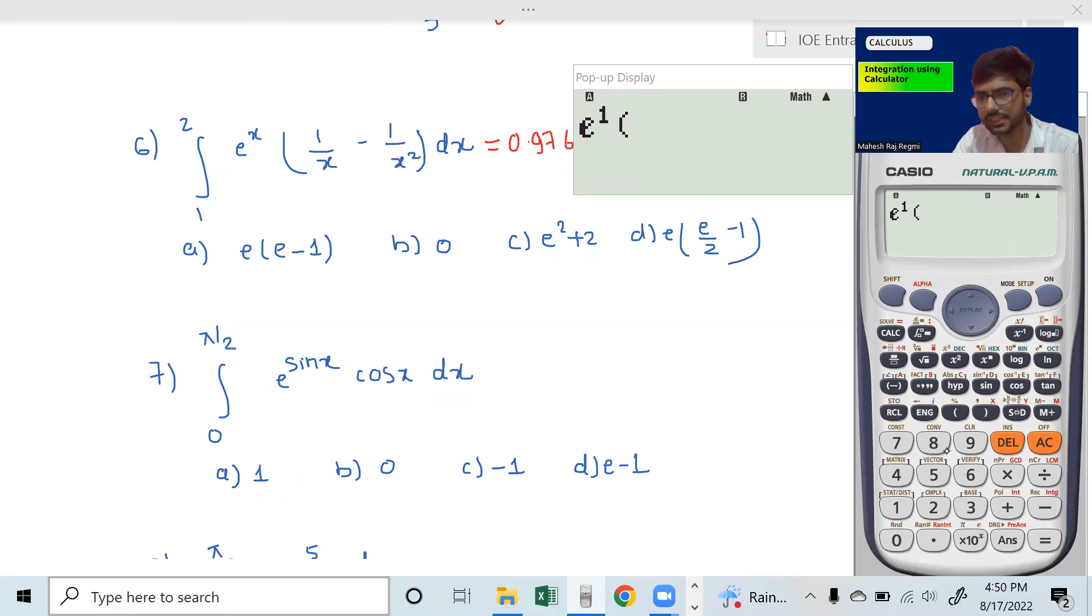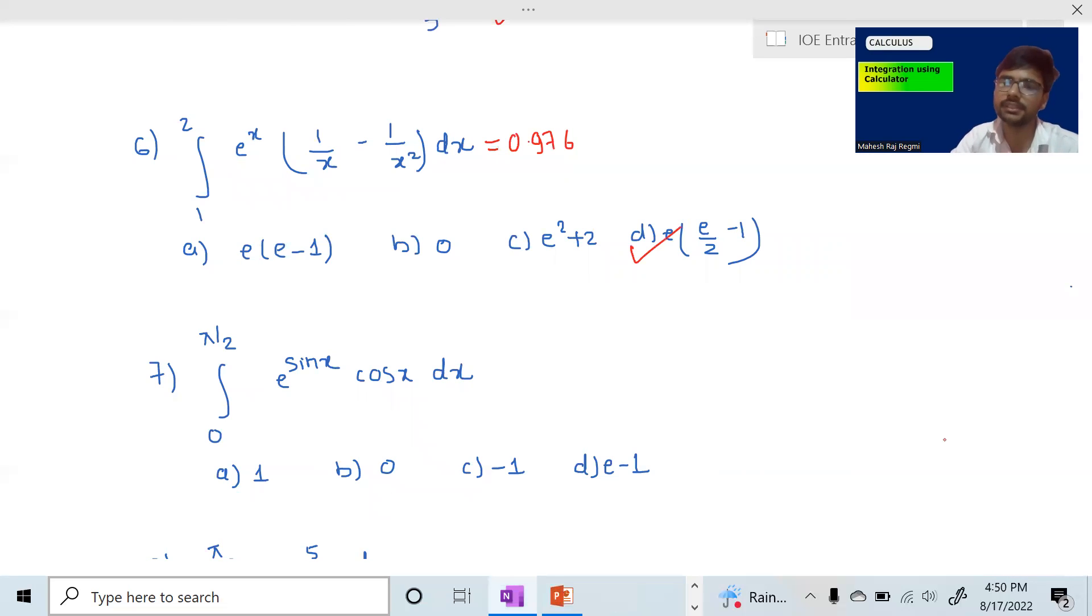Alpha E minus 1 gives 0.9765. Alpha E times E by 2, alpha E divided by 2 minus 1, gives 0.9765. That is option D for the answer.